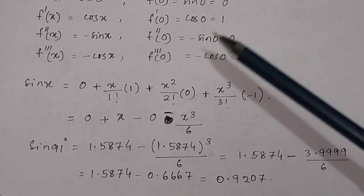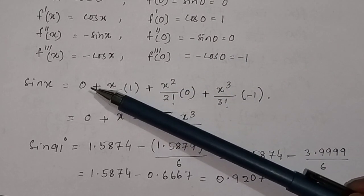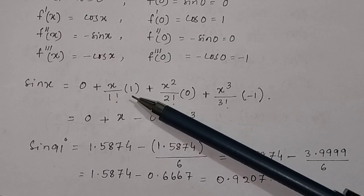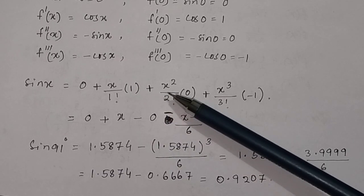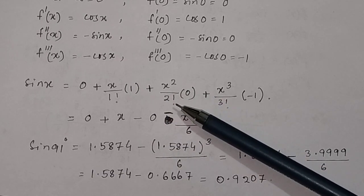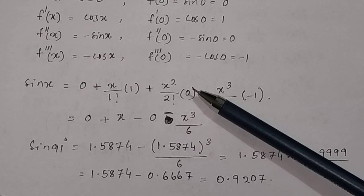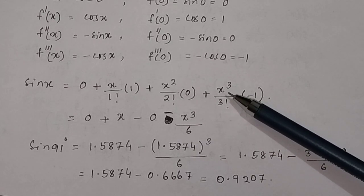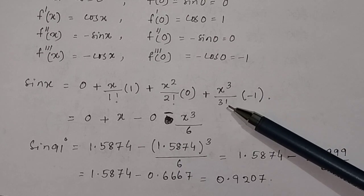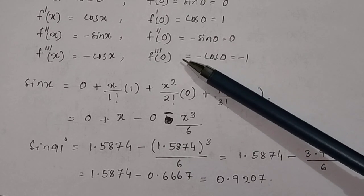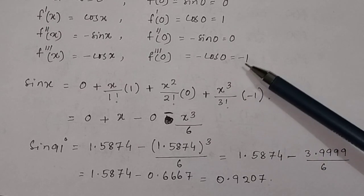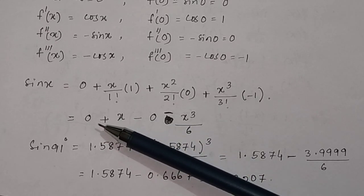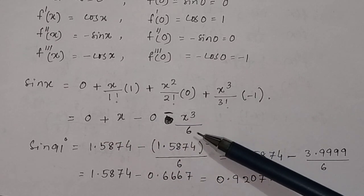The expansion of the sin function gives: the first term f(0) equals 0; the second term is x divided by factorial 1 times f'(0), which is 1; the third term is x squared divided by factorial 2 times f''(0), which is 0, so it vanishes; the next term is x cubed divided by factorial 3 times f'''(0), which is minus 1. So the expansion becomes: sin x equals x minus x³ divided by 6.